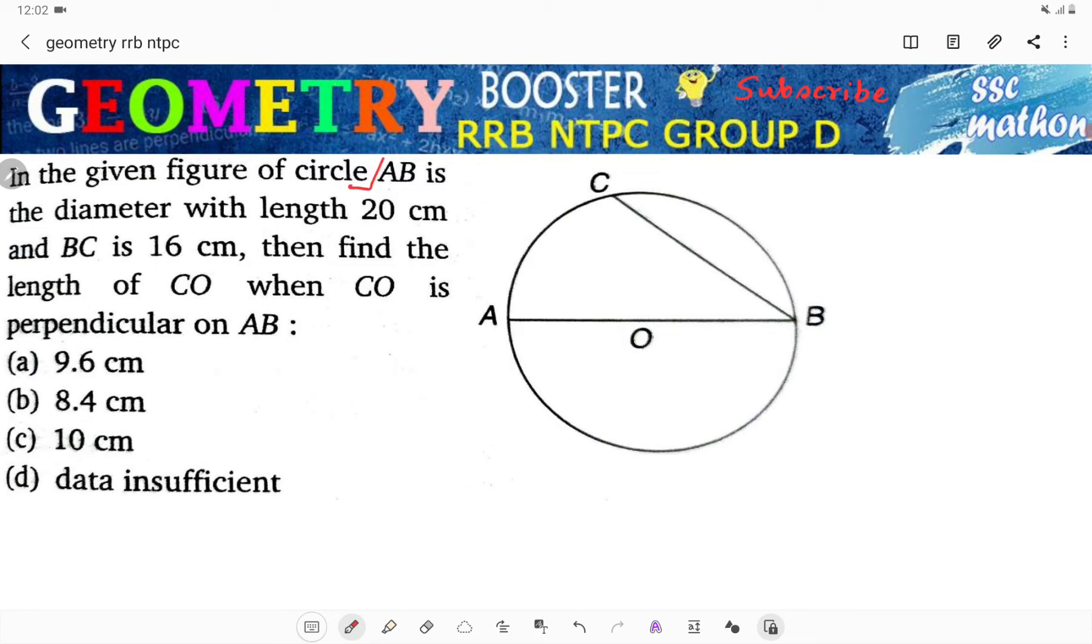In the given figure of circle AB is the diameter with length 20 centimeters, BC is 16 centimeters, then find the length of CO when CO is perpendicular to AB. So CO is perpendicular to AB.